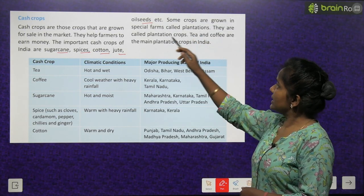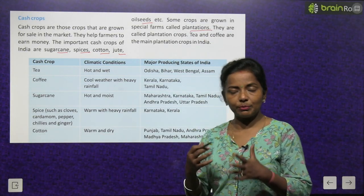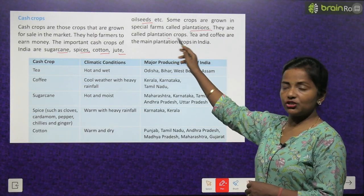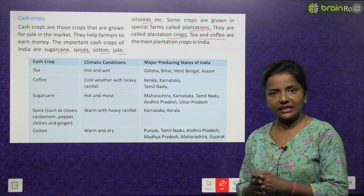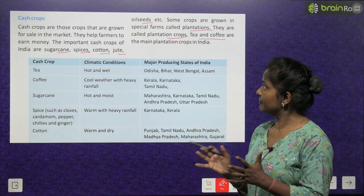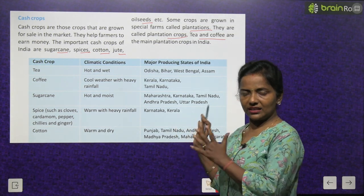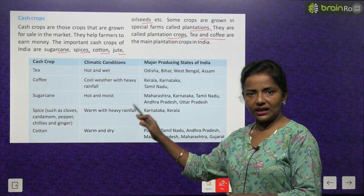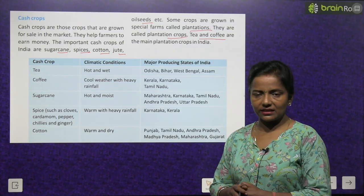Some crops are grown in special farms called plantations and are called plantation crops. Tea and coffee are the main plantation crops in India. Now there is also a table for cash crops showing the climatic conditions and major producing states.